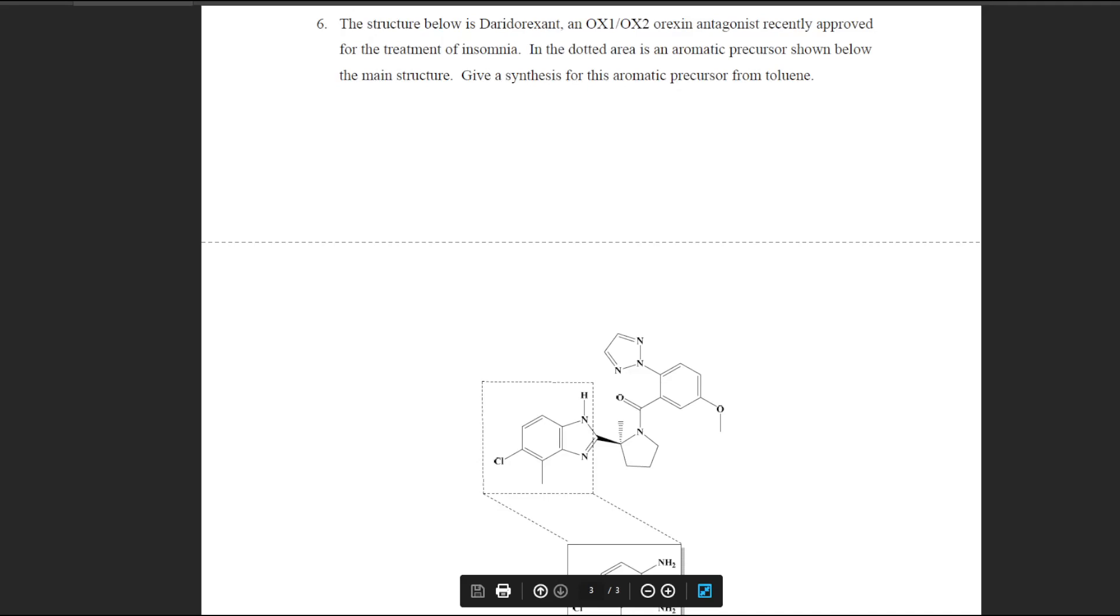All right, question six is the second of our aromatic synthesis questions, and that is for the new orexin antagonist drug. There is an aromatic portion of this which we can make out of a diamino benzene, a methyl group, and a chlorine on it, and that's what we're going to do. We're just going to look at making that.